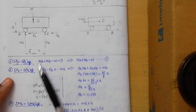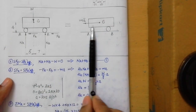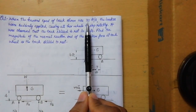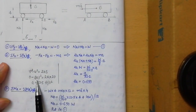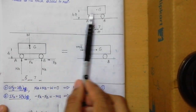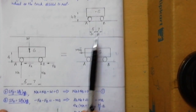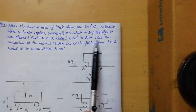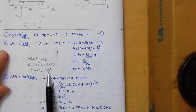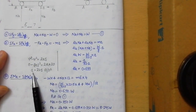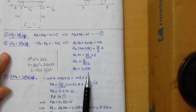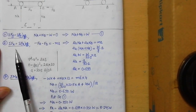Final velocity v = 0 (truck stops after skidding). Initial velocity u = 30 ft/s (speed when brakes were applied). Distance s = 20 feet (truck skids to rest in 20 feet). Substituting: 0² − 30² = 2·a·20, giving a = 22.5 ft/s². Substituting back: μk = 22.5/32.2. Now we can find μk from this equation.